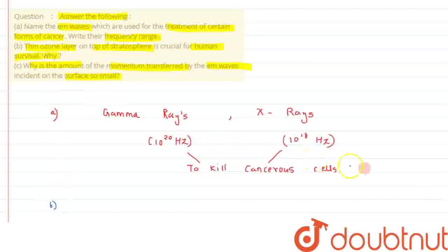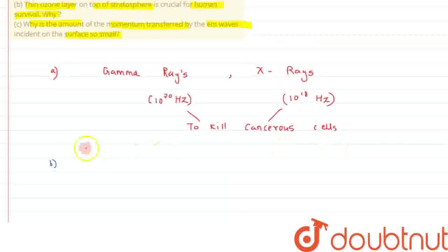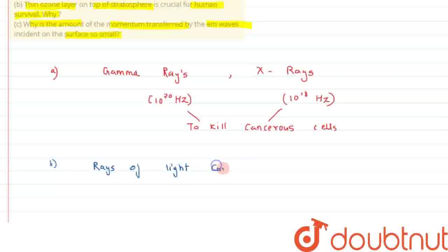For part B of the question, it says we need to find the reason why ozone layer is crucial for human survival. So, we know rays of light coming from sun has ultraviolet radiation, that is UV rays which are very harmful for humans. And this UV rays cause cancer.